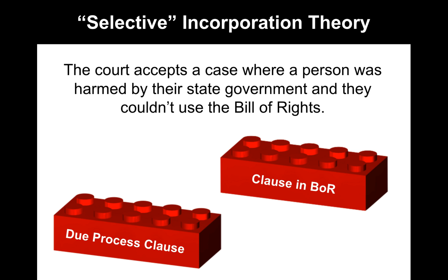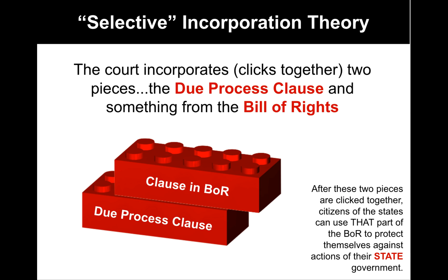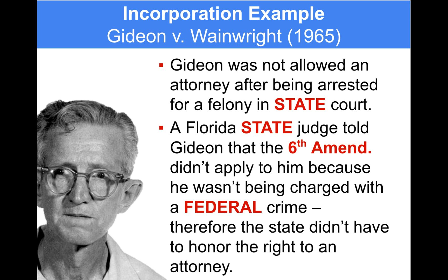Here's a nice visual example. We have the Due Process Clause from the 14th Amendment and a clause from the Bill of Rights, like freedom of speech. If you click them together, then they apply to the states. But this can only be done through a court case. Whenever SCOTUS feels the Due Process Clause pertains to a Bill of Rights clause, they may have a case that shows that.